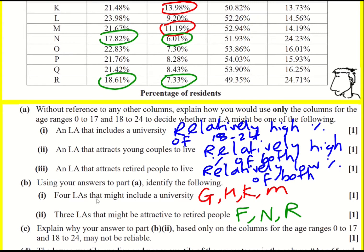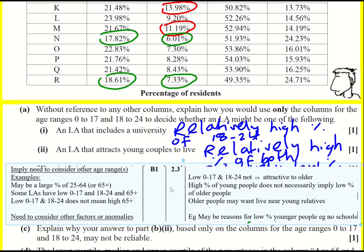For part C we're asked to explain where our answer to part B2 — deciding which three local authorities might attract retired people, based on columns 0 to 17 and 18 to 24 — why might it not be reliable? Well, maybe older people would like to go live near their younger relatives, so there's more to it than just looking at the percentages. Just because you get low proportions doesn't mean it's not attractive to older people. There could be a lot of 25 to 64 year olds, or maybe a high 25 to 64 but low 65 plus. There could be reasons for a low percentage of younger people such as no schools. We shouldn't be making conclusions based on just these two columns.